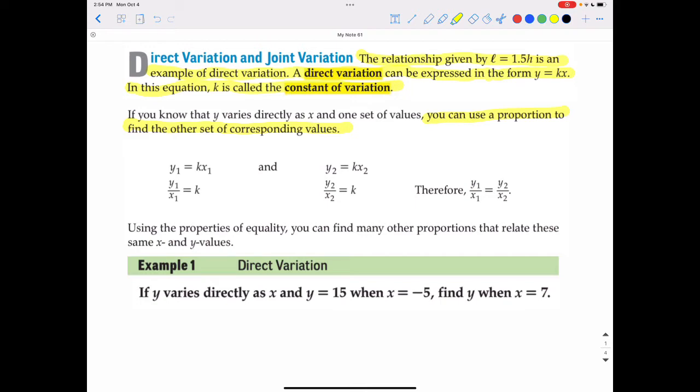With direct variation, you can use a proportion to find the other sets of corresponding values. We know we can solve proportions by cross-multiplying and dividing, then we can solve a direct variation question.